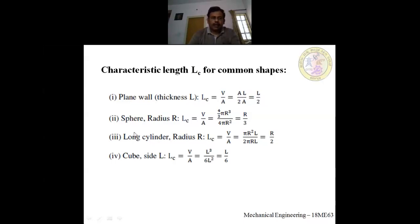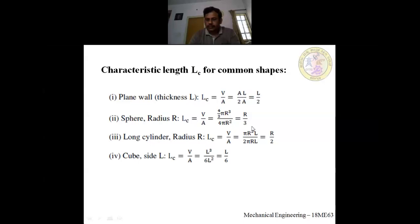For a sphere of radius r, the characteristic length is volume divided by area. Volume of a sphere is 4/3·π·r³ and surface area is 4·π·r². Simplifying, 4π cancels and you get r/3 as the characteristic length for a sphere.